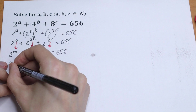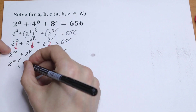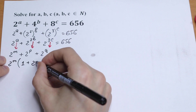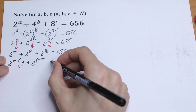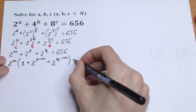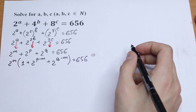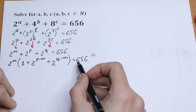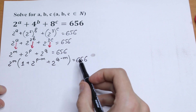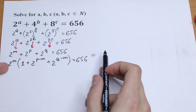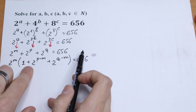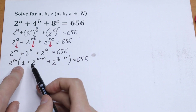After factoring out 2 to the power m, what we will have is: 2 to the power m, times the quantity 1 plus 2 to the power (p minus m), plus 2 to the power (q minus m), equal to 656. Notice that inside the parentheses we have an even number plus an even number, which gives an even number, and plus 1 makes it an odd number.